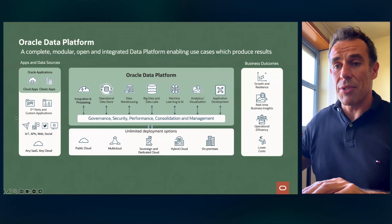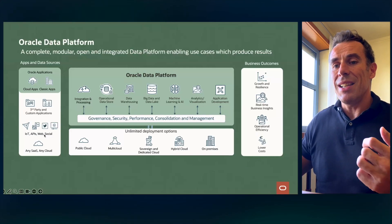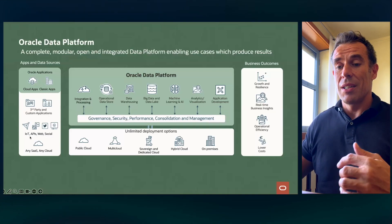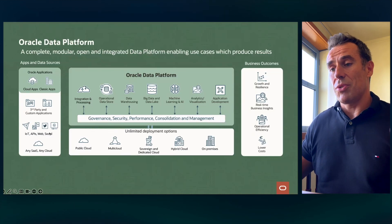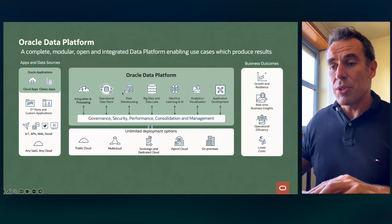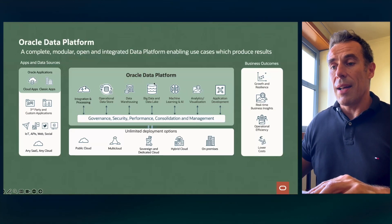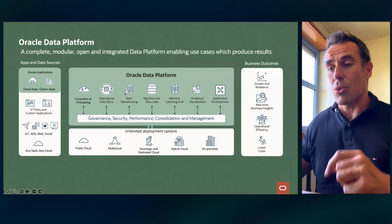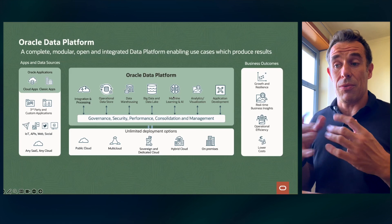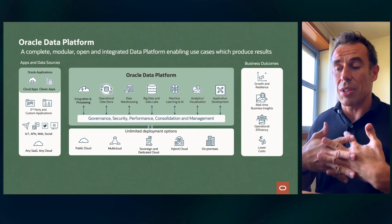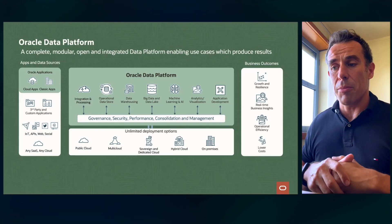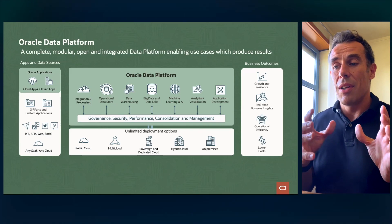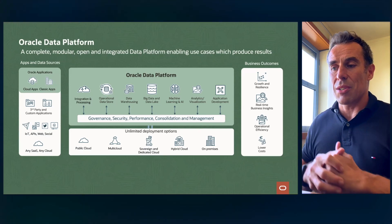Typically, we ingest data from different sources — any type of data from any type of source, whether that's a SaaS application, an on-prem application, databases, files, telemetry from devices, social media, videos, or images. Once ingested, you process and store the data across different storage layers — choosing the most efficient layer for the particular dataset and use case — then use it for machine learning and AI, visualizations for end users, or low-code application development mixing transactional and OLAP data.